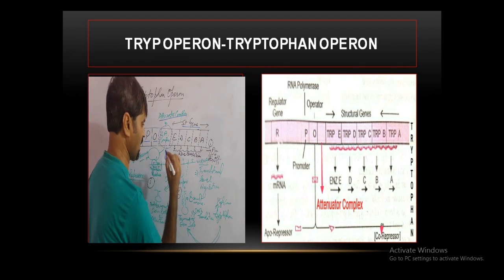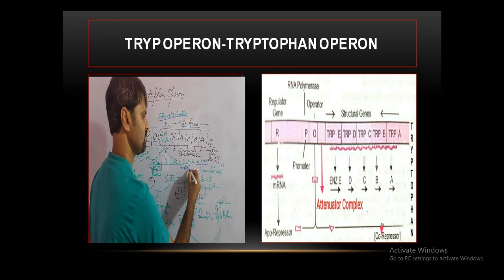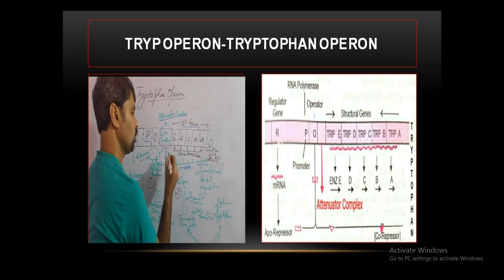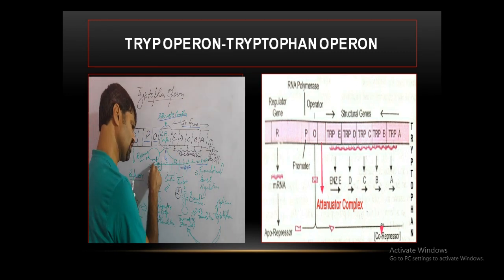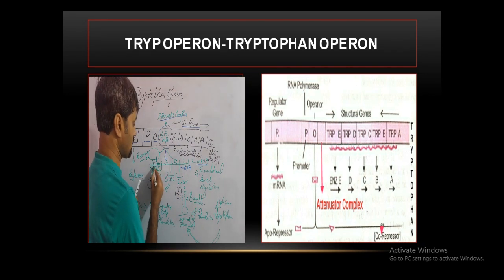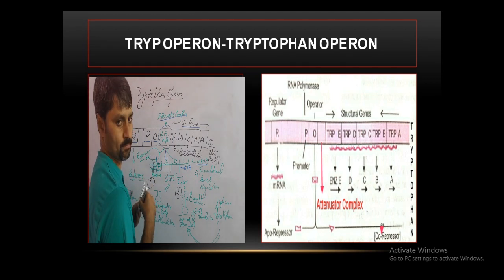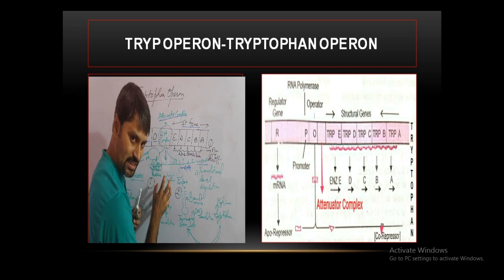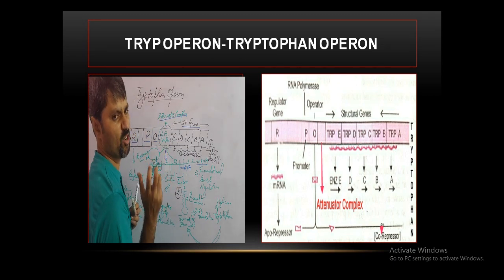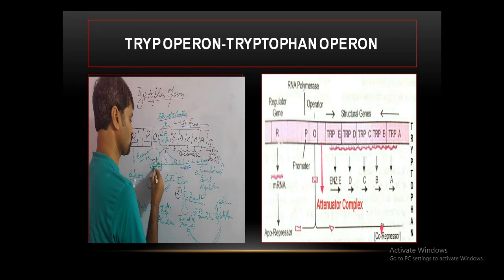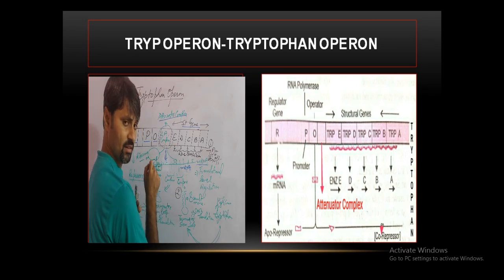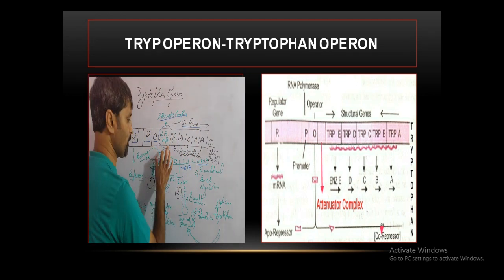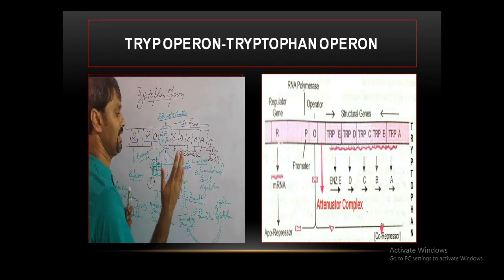The messenger RNA of the leader attenuator complex has segments — numbered one, two, three, four, and five. These segments contain nucleotide residues, including codon sequences for tryptophan. Tryptophan-charged tRNA with the anticodon for tryptophan is required. There are two tryptophan residues, and this is very important because it regulates the rate of tryptophan synthesis. This is how the structural gene is regulated by the LA complex at the translational level.